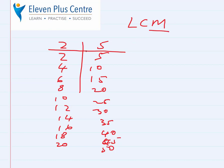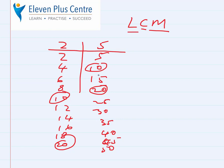Now we've got the multiples of both numbers. Let's look for the common ones — numbers that appear in both lists. Is there a 5 in the 2 times table? No. Is there a 10? Yes — we circle 10 in both. Is there a 15? No. Is there a 20? Yes. If you carried on, you'd also find 30. We want the lowest common one, and the lowest we've circled is 10. So the LCM of 2 and 5 is 10. Remember: factors make up the number; multiples are in the multiplication table of the number.